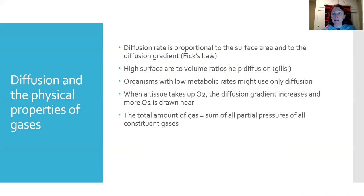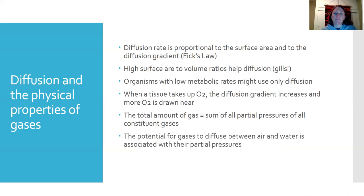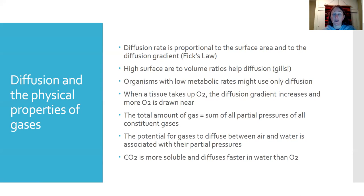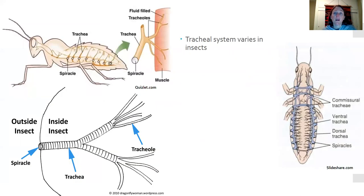The total amount of gas in water is the sum of all the partial pressures of every constituent gas in the mixture. The potential for gases to diffuse between the air and the water is associated with these partial pressures. CO2 is actually more soluble in water and diffuses faster in water than oxygen, so organisms have to deal with different diffusion rates for these two gases as they're trying to bring oxygen in and push carbon dioxide out.